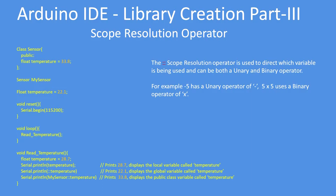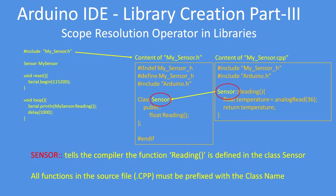When we include a library mySensor.h in this example, what that does is include the class definition — in this case it's been called Sensor. Then Sensor:: tells the compiler that the function reading in sensor.cpp has been defined in the class called Sensor.